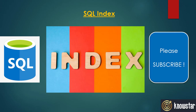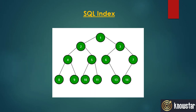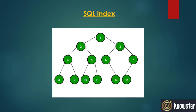An index is a physical structure associated with a table or view. The index is a B-tree structure having root, intermediate, and leaf levels. Imagine data stored sequentially against data stored as a tree structure — it will always be faster to navigate through the branches in a tree structure.